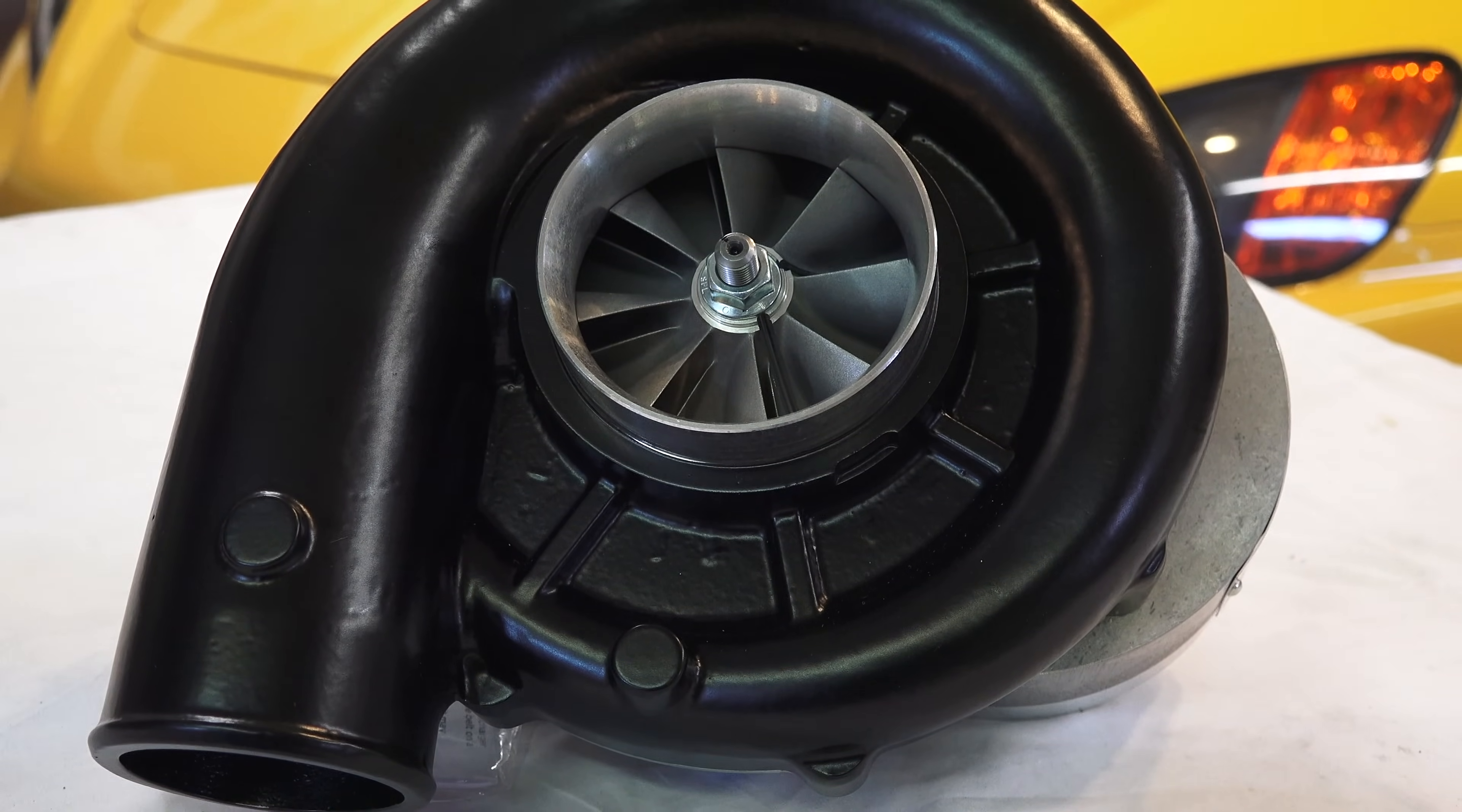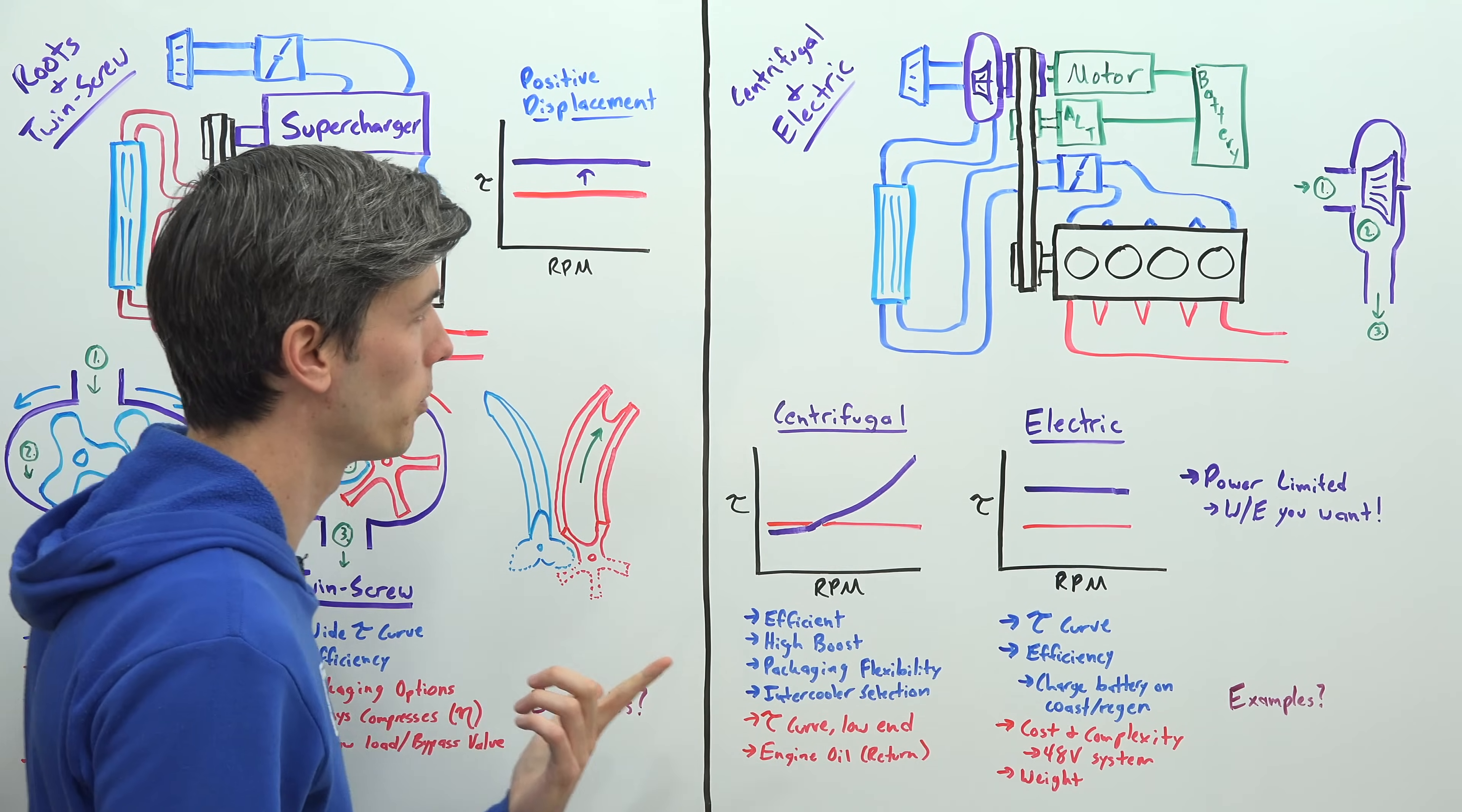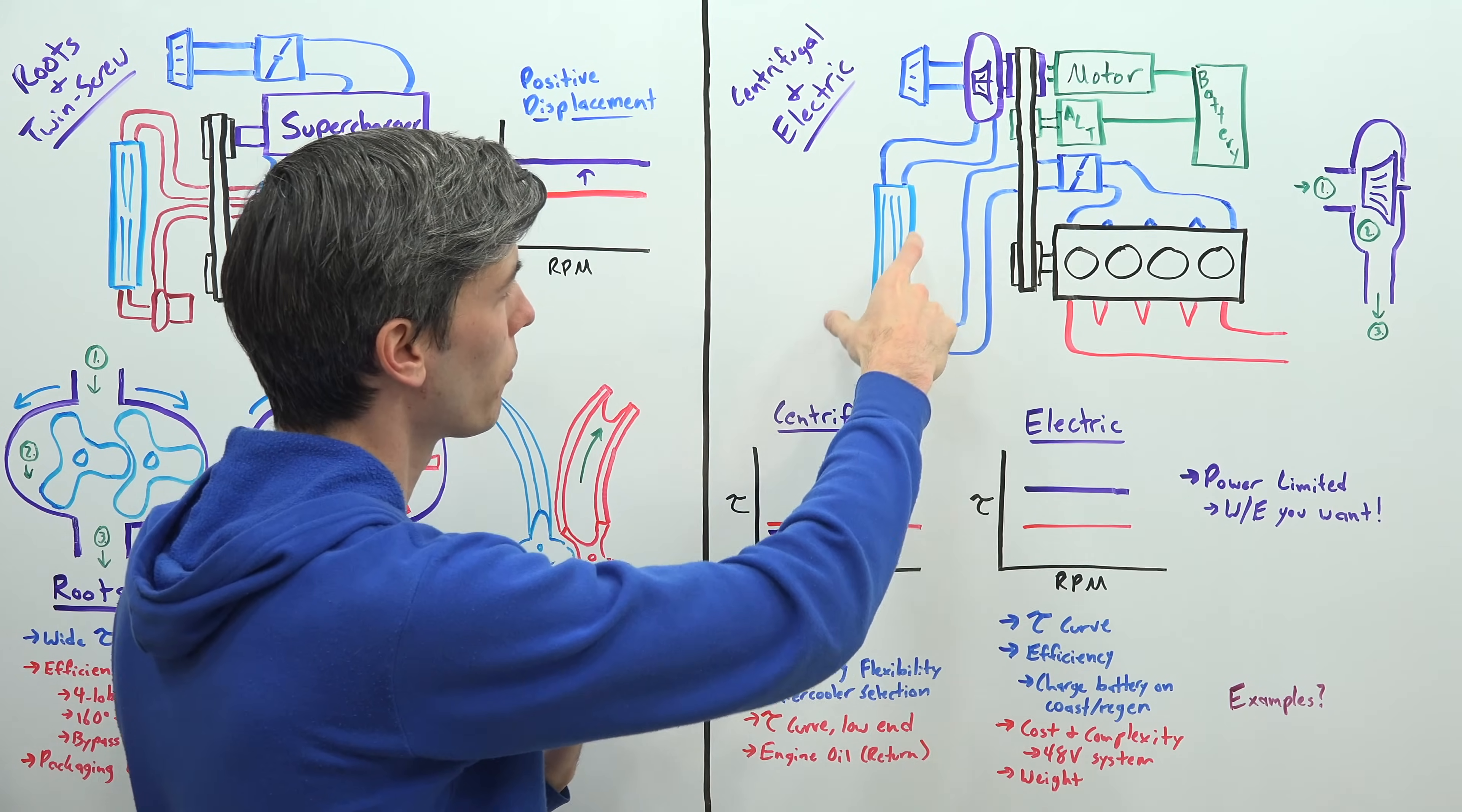So some of the pros and cons here - centrifugal style tends to be an efficient style of supercharger. It does allow for really high boost, however of course that's all at the top end. Packaging flexibility is great - it's a small system. You know in my S2000 there was plenty of space for it and you have flexibility in where it goes.